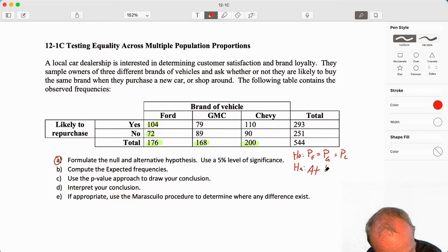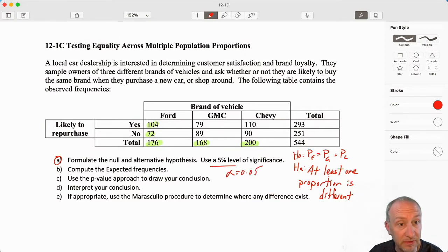The alternative: at least one proportion is different or not all of them are the same. Either one of those works perfectly well. Here we're doing this at the 0.05 level of significance.